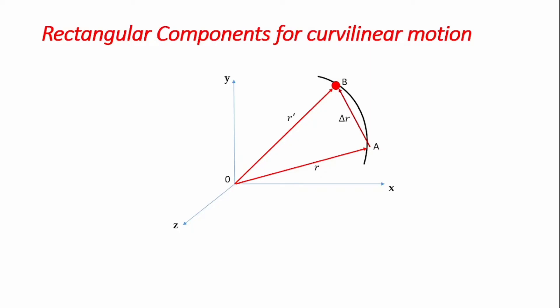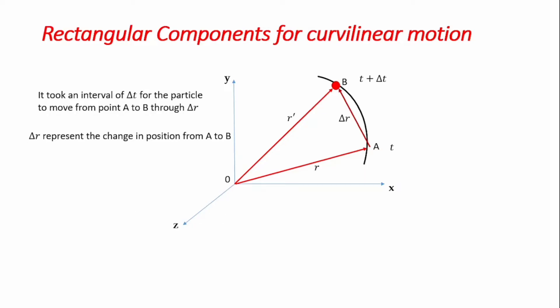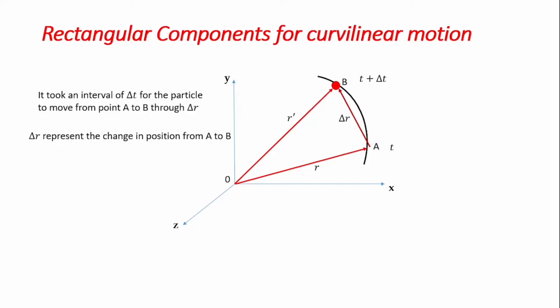The position coordinates of the object at every point in time are given by r. The object was at point A at time t, and at time t plus Δt — the difference in time. We can tell that it took an interval Δt for the particle to move from point A to point B through a displacement vector Δr, where Δr represents the change in position from point A to point B.